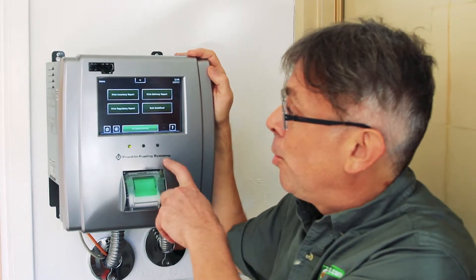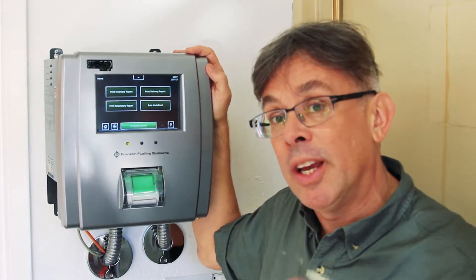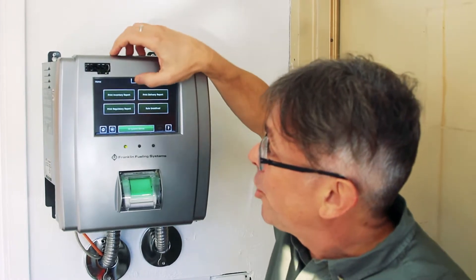With the EVO 550 by Franklin Fueling System, you can actually tell pretty quickly if you have a double or single wall tank and pipe. You can go to the Quick Jump button, go to Sensors.